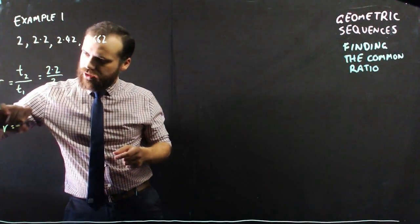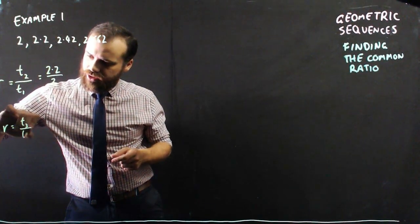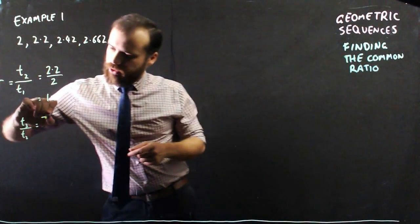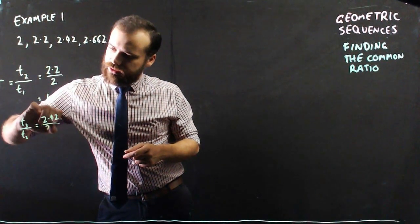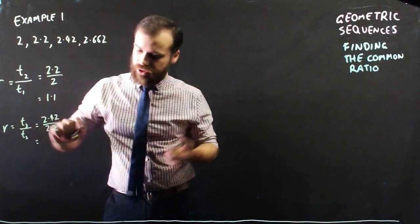I could have done r equals term 3 over term 2. That's 2.42 over 2.2, and that's also going to equal 1.1.